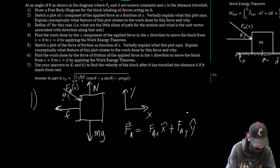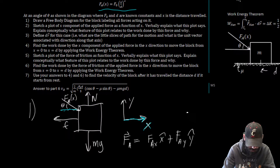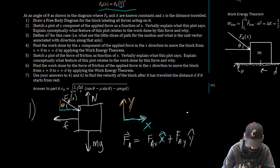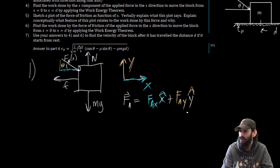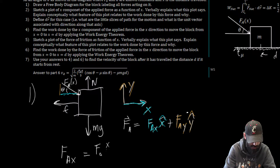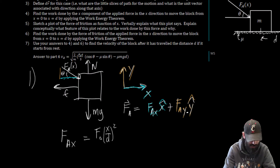That's just completing the triangle we have here — the X direction and Y direction components. So F_A_X is going to be equal to the magnitude of the force, which is F_0 times X over D quantity squared, times the cosine of theta.